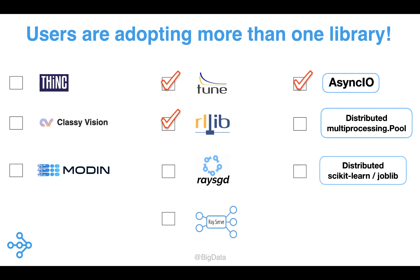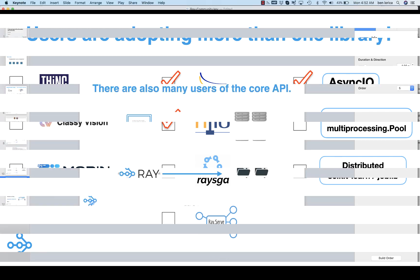Another important point is that each of these libraries helps grow awareness and usage of Ray. In recent conversations with users, we found that many of them began using Ray through one of these libraries and tools. These libraries also serve as entry points through which many users learn about the broader Ray ecosystem. While Ray users can pick and choose which libraries to use, we believe most will end up using more than one. Recent conversations with over 40 companies have borne this out — as users become comfortable with one tool, they end up using the other Ray libraries as well.